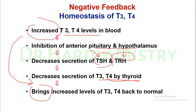The negative feedback loop works when a certain substance has been increased. Some type of regulatory measures our body takes will reduce whatever the abnormal increase in substance concentration back to normal level.